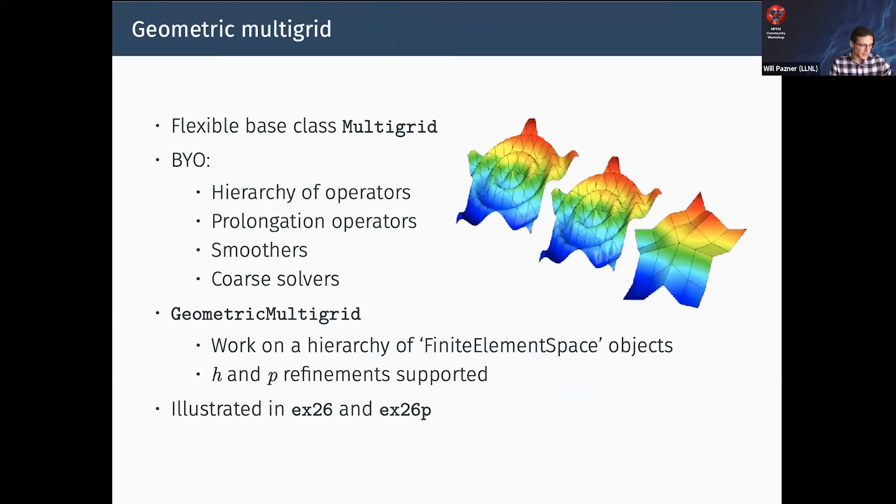To begin with multigrid, MFEM provides a flexible base class called Multigrid. If you use this class, you bring your own hierarchy of operators, prolongation operators, smoothers, coarse solvers - basically everything. You bring all the building blocks and it puts it together into a V-cycle or W-cycle. To help you out with common cases, we have a derived class GeometricMultigrid that works on a hierarchy of finite element space objects, supporting both H and P refinements.